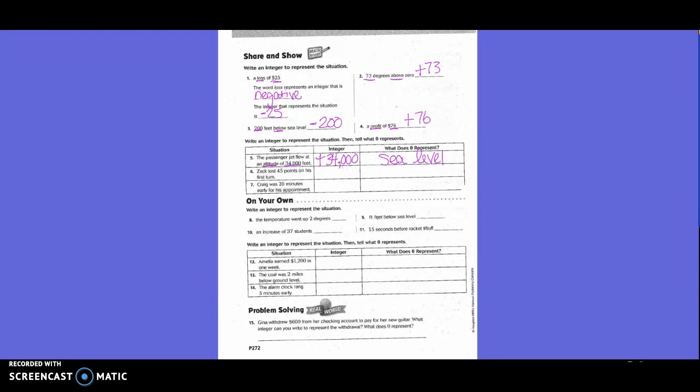Zach lost 45 points on his first turn. What do we need to underline? Lost and 45. Is it negative or positive? Negative 45. What does zero represent in this case? Kind of like a basketball game - it means either gaining or losing points.